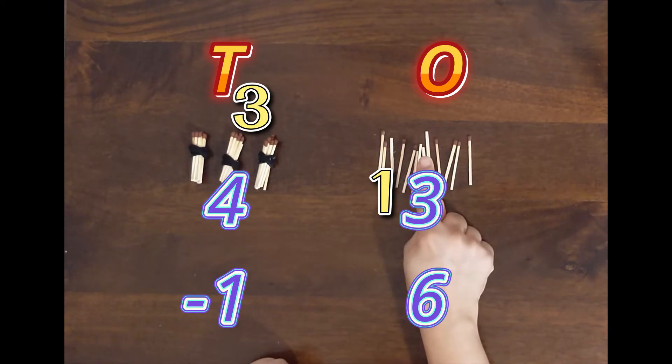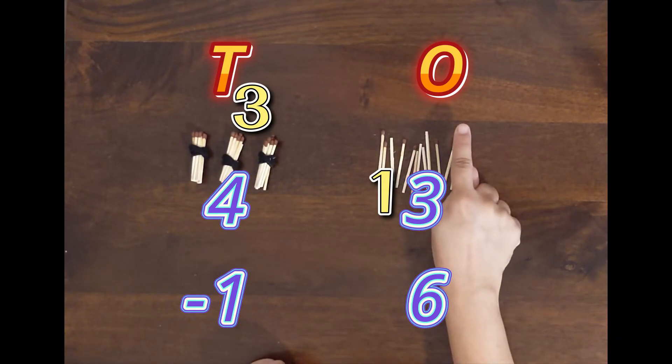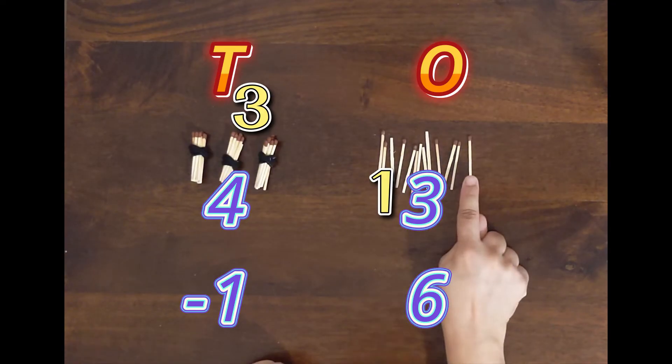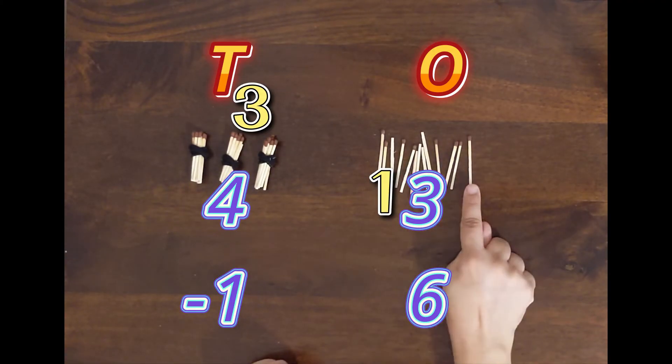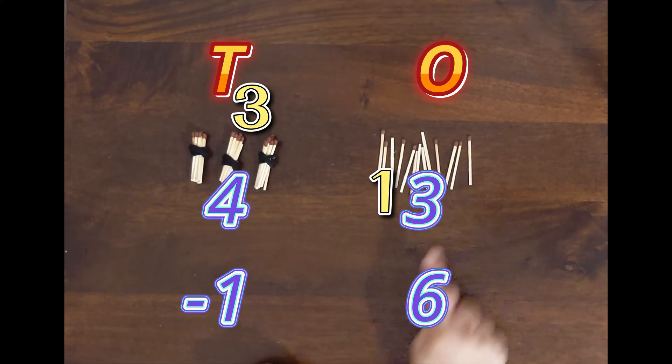Because 1 tens is 10 ones, so 10 plus 3 is 13. We have 13 sticks here. You can count: 1, 2, 3, 4, 5, 6, 7, 8, 9, 10, 11, 12, 13. We have 13 sticks here.